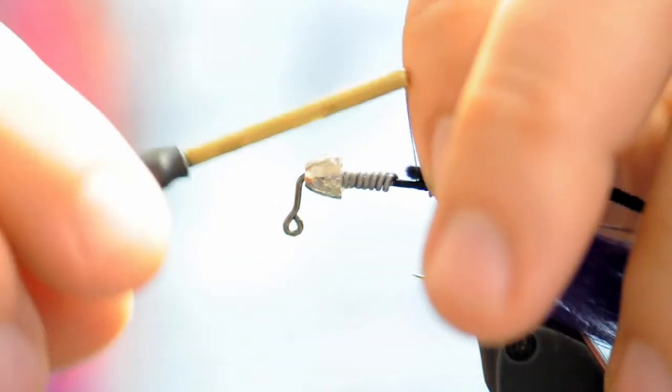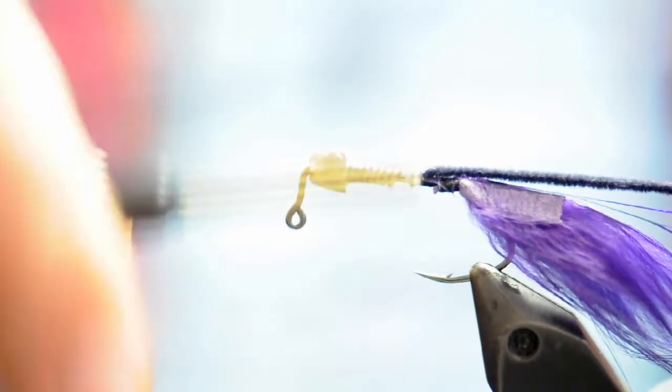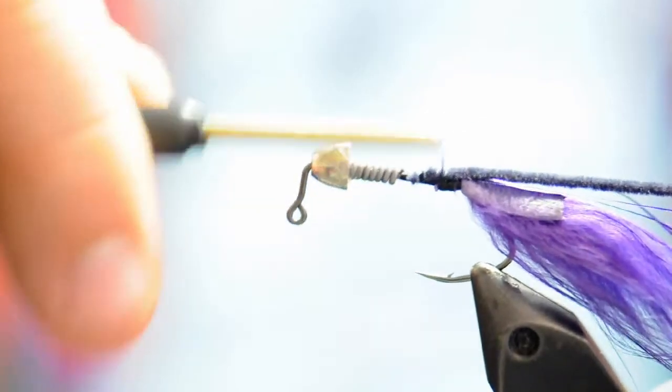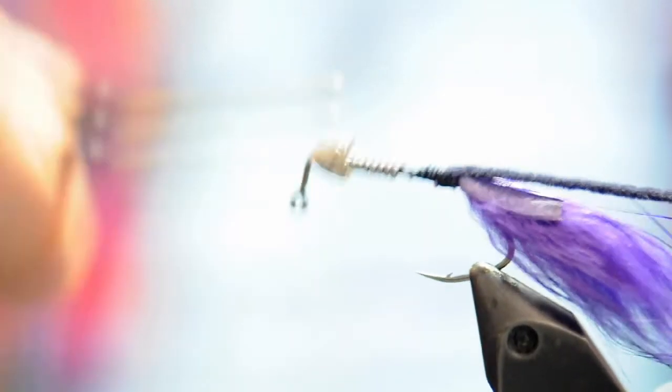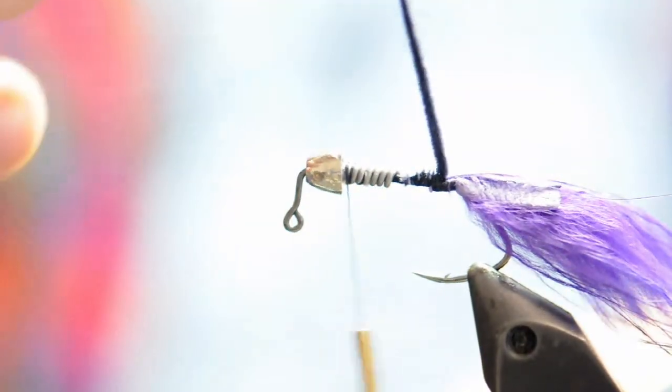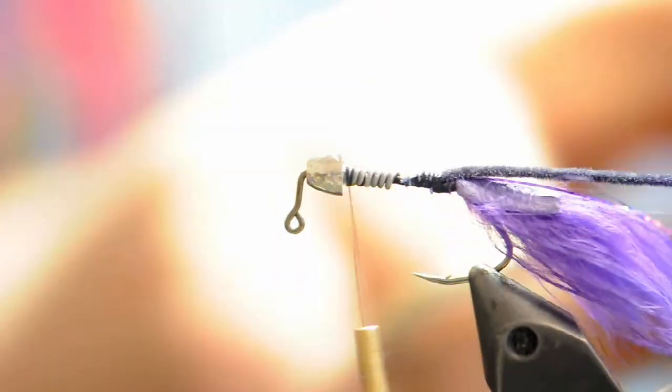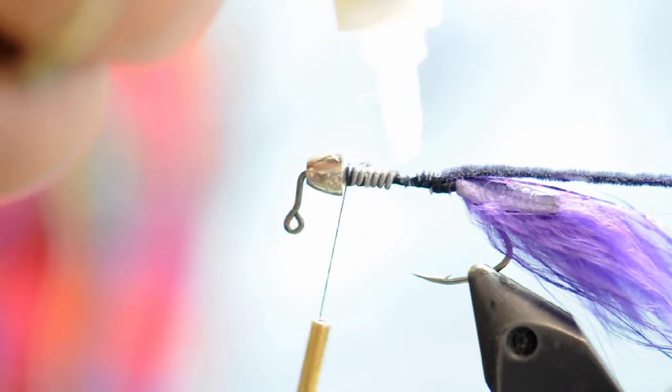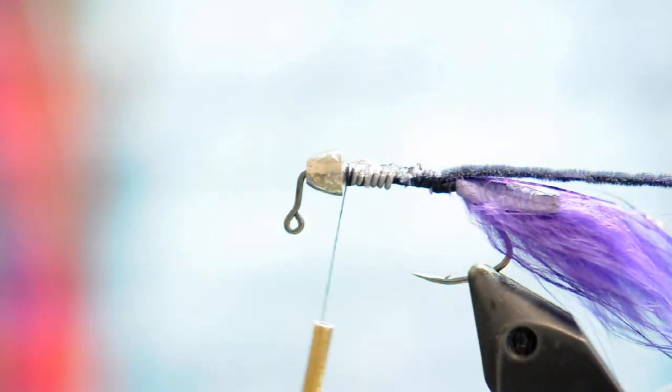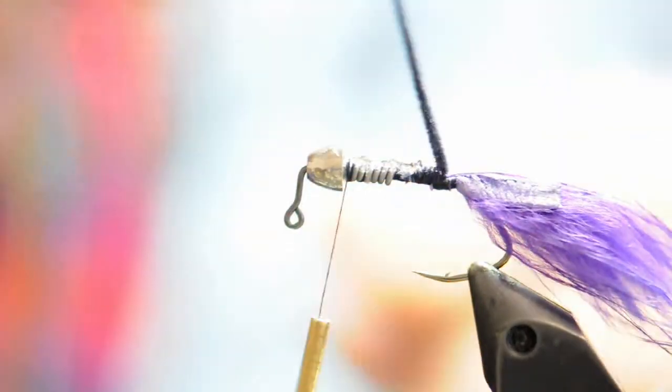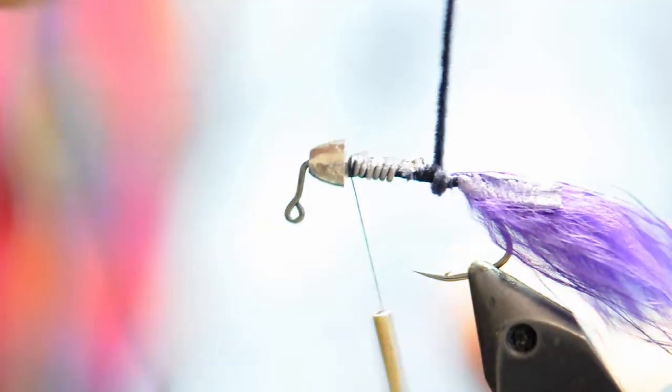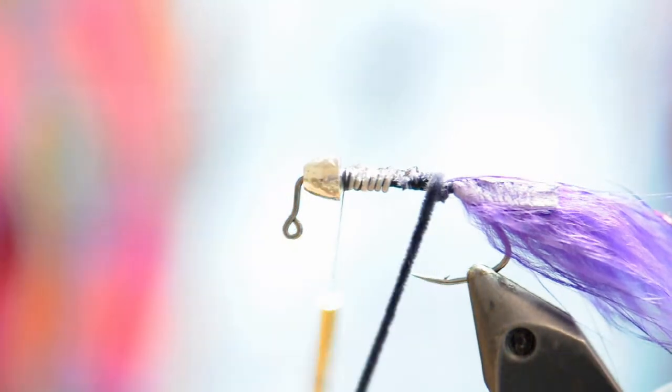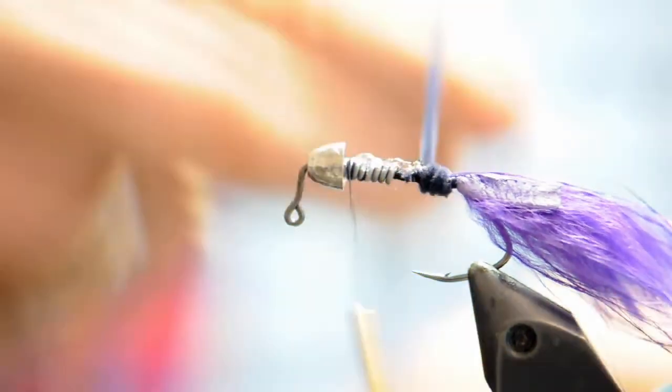Next we can tie in our Ultra Chenille. And I tie this in back behind the lead wraps to try and help even out the overall body taper. And after experimenting with this fly with guides it became apparent that the easiest way to increase the durability was a simple layer of super glue over the micro chenille. And this significantly extended the overall lifetime of the fly.